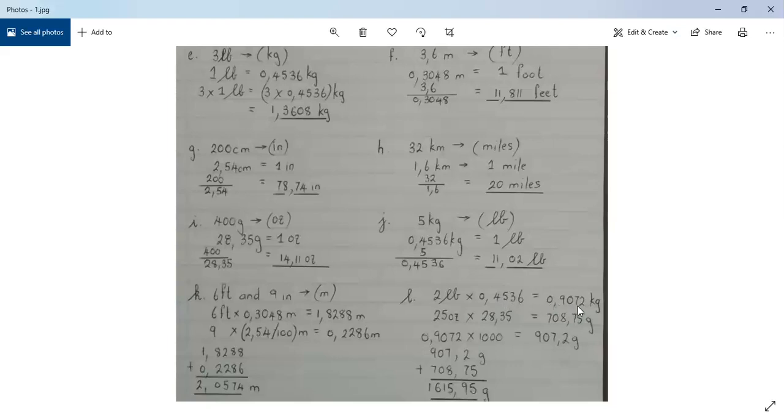And to convert from ounces to grams, we get 708.75 grams. But remember, we need the solution in kilograms. Therefore, to convert grams to kilograms, we multiply by 1000.